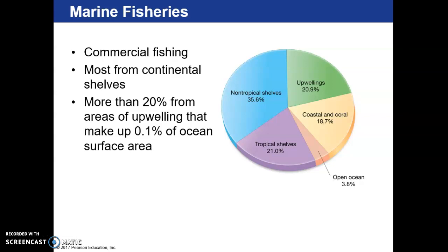Our marine fisheries are usually along the continental shelf, and about 20% of our fisheries occur in upwelling areas. Upwelling areas make up only about 0.1% of the total ocean, so we have a lot of our fishery volume coming from a very small portion of the ocean.